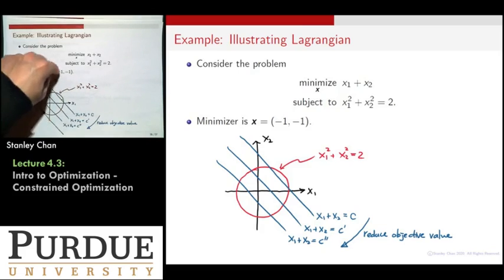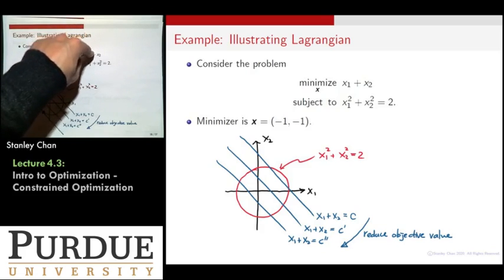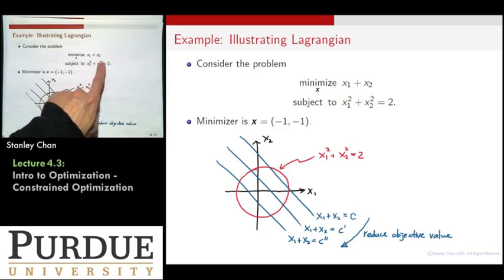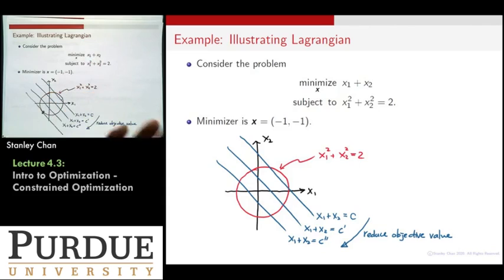If you don't believe me, plug these two numbers into here, and check, one, whether the constraint is satisfied? Yeah, of course. Two, is this objective value minimized? Now I have minus two. Can you get a number that's lower than minus two? You cannot. I promise. So that means I have found you the global minimum point.